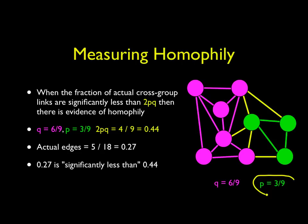Here's our P, which is our probability of being in the right side. Here's our Q, which is the probability of being in the left side. When the fraction of actual cross-group links in the real graph that we see is significantly less than 2PQ, then there's evidence of homophily. Q is 6-ninths, P is 3-ninths in this case, and 2PQ is 4-ninths, which is 0.44.